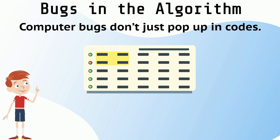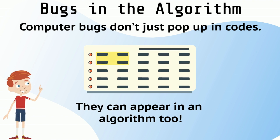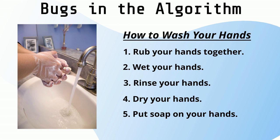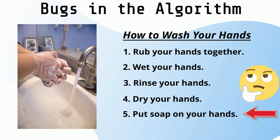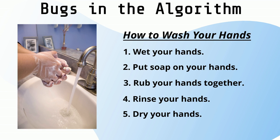Computer bugs don't just pop up in codes — they can appear in an algorithm, too. Let's take a look at this algorithm. Hmm, something doesn't look right. This code is all out of order. I'm sure you are not supposed to put soap on your hands after you dry them. Let's debug this code so that it makes sense. There! The algorithm is now correct.